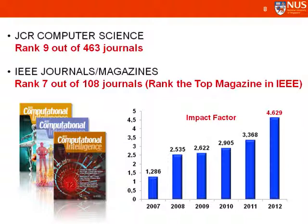You may ask why you should publish your articles in the CI magazine. Currently the magazine has quite a good ranking based on its impact factor. It is ranked 9 out of 463 journals under the JCR computer science category, and also ranked 7 out of 108 IEEE journals and magazines. I'm pleased that it is currently ranked the top magazine among all IEEE magazines according to impact factor. We have also increased every year, from an impact factor of 1.286 to the current 4.629.